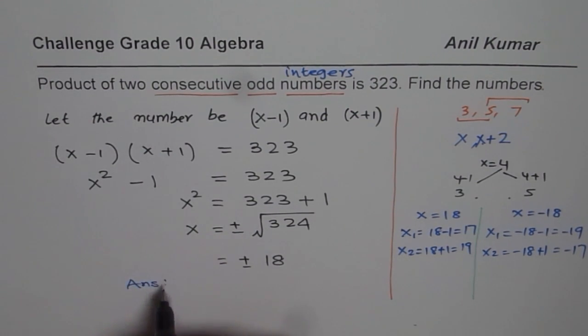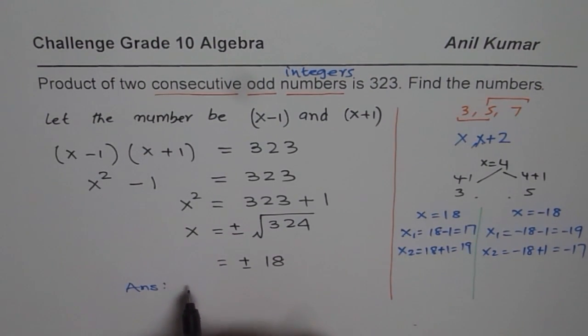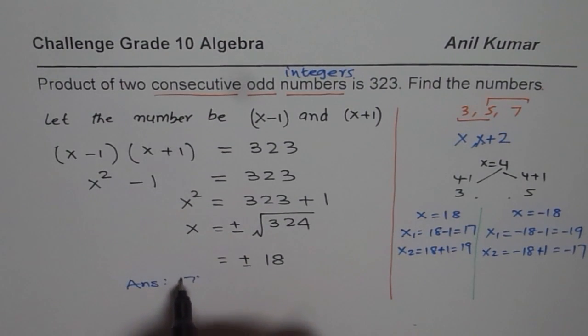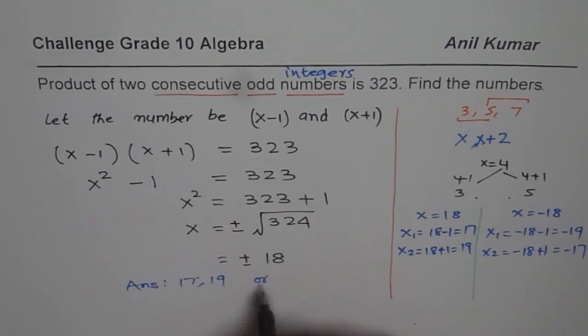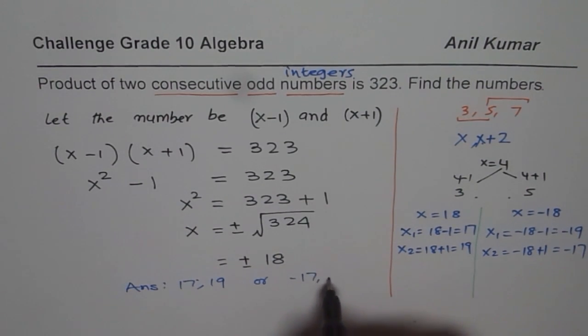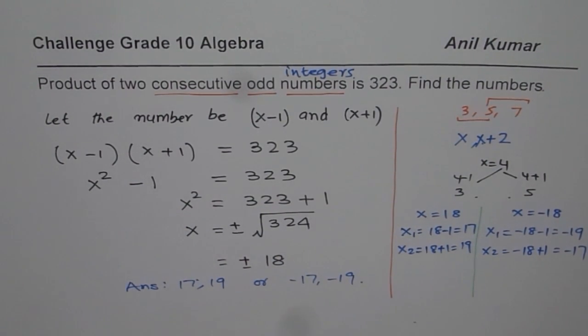So we can write down our answer is that there are two possibilities. The numbers could be 17, 19 or minus 17, minus 19. I hope with this example you could review a few concepts.